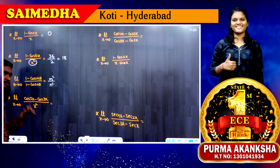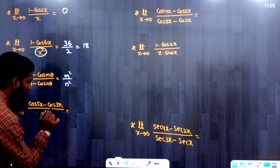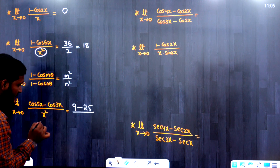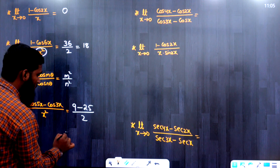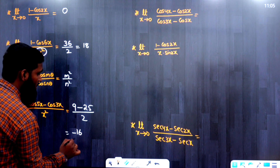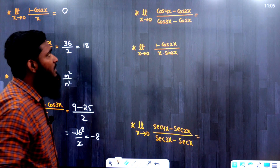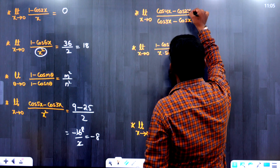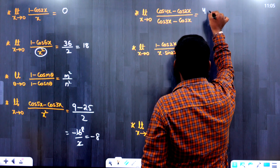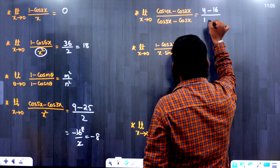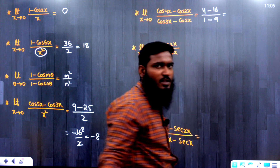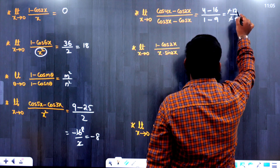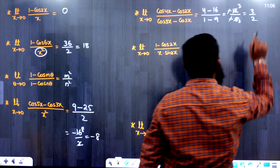Question 4: limit x→0 of (cos5x − cos3x)/x². Using the formula (b² − a²)/2: b = 3, so b² = 9; a = 5, so a² = 25. Answer = (9 − 25)/2 = −16/2 = −8. Question 5: limit x→0 of (cos4x − cos2x)/(cos3x − cosx). Using (b² − a²)/(d² − c²): numerator = 2² − 4² = 4 − 16 = −12; denominator = 1² − 3² = 1 − 9 = −8. Answer = −12/−8 = 3/2.